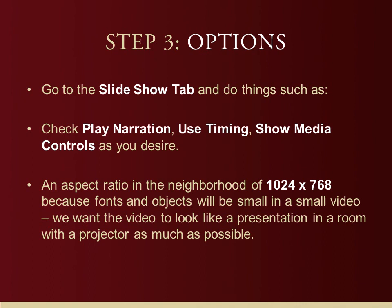Step three: options. Options are referring to how your video is going to display. Go back into PowerPoint 2010, up into the ribbon, and look at the Slideshow tab. You're going to see Play Narration, Use Timing, and Show Media Controls — you'll probably want to have all those things checked because it makes your video look nicer. I'm also recommending that you use an aspect ratio of 1024 by 768. It gives you a nice size video that mirrors the effect of watching a presentation in a room with an overhead projector, giving you a large font size and clear details of objects in your PowerPoint.